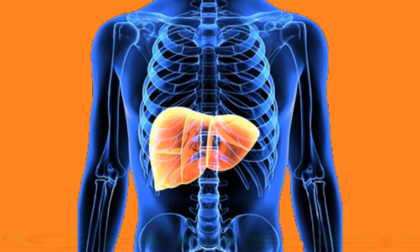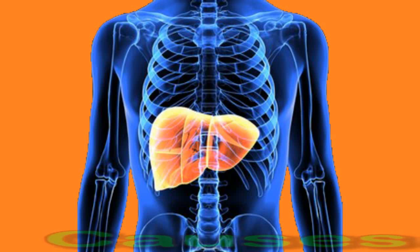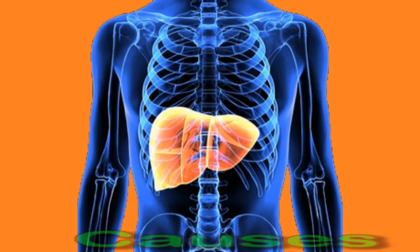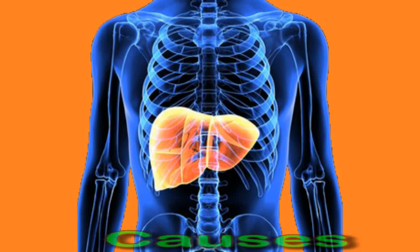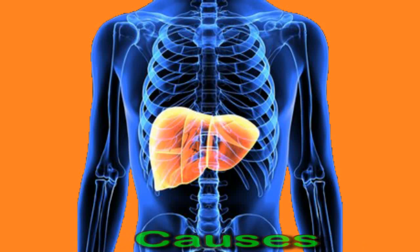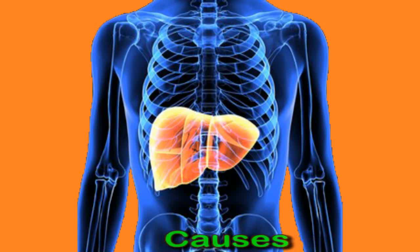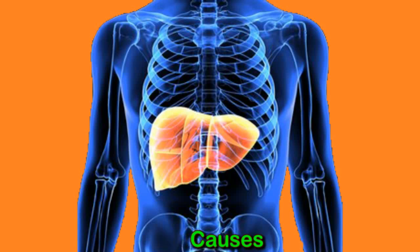Some conditions cause bilirubin levels to be high before it reaches the liver. This is the pre-hepatic, or pre-liver, phase, and it can be caused by hemolytic anemia and the reabsorption of internal pools of blood by the body. Hemolytic anemia occurs when too many red blood cells are broken down before the end of their natural life cycle.